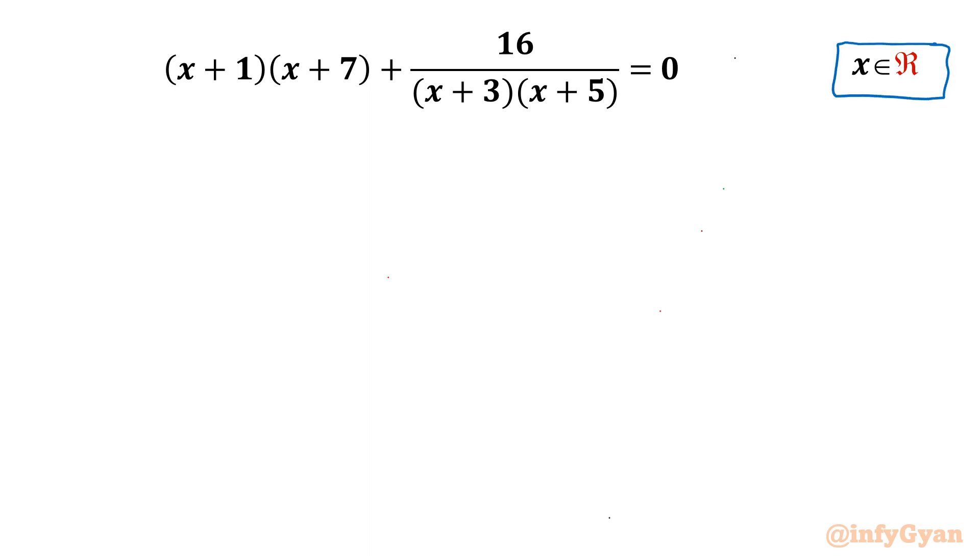So let us get started by considering domain. Denominator is not allowed to be 0. So x cannot be negative 3 and cannot be negative 5 also.